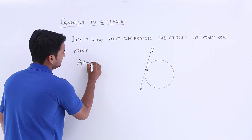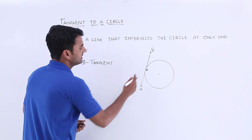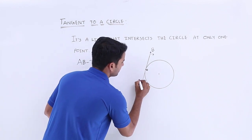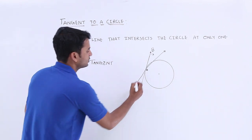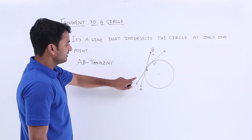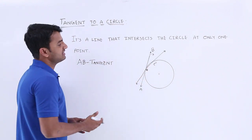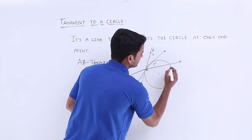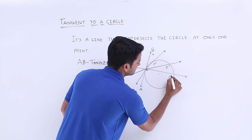Now if I tilt this line, it will become like this. This line now has two points of contact — one is C and the other is C dash. We already know that a line which has two points of contact with a circle is considered as a secant. If I tilt it a little more, we get C double dash, and further tilting gives C triple dash.